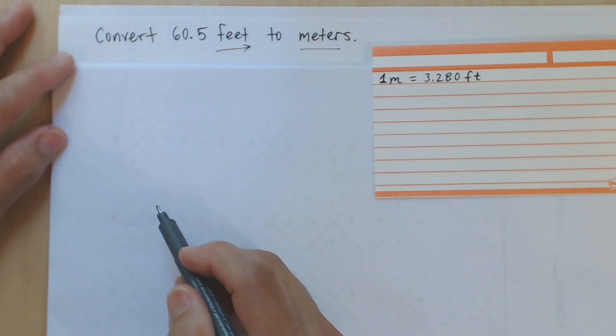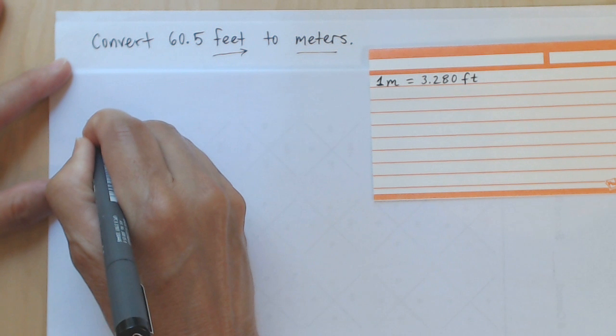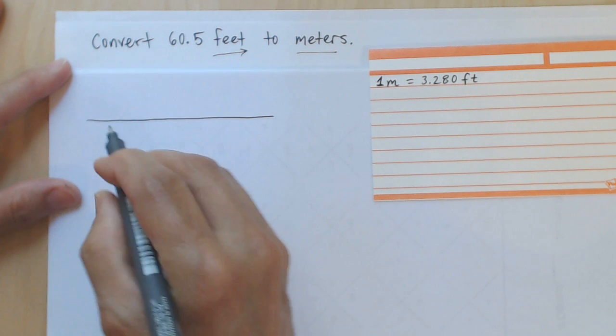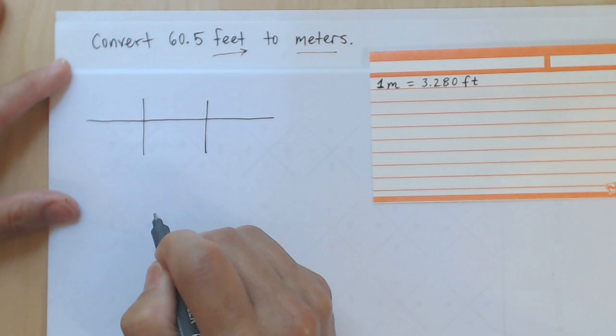Let's convert 60.5 feet into meters. We'll do this using a method I call the fence post method, so called because I am going to draw what looks perhaps like a fence.